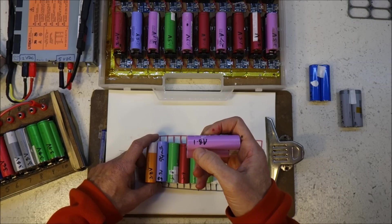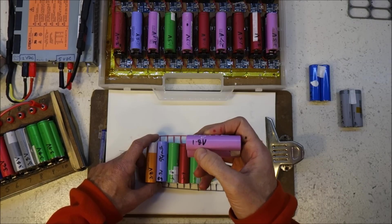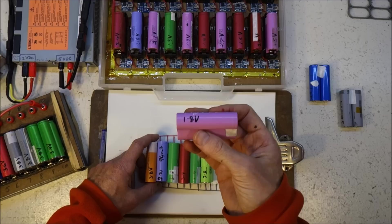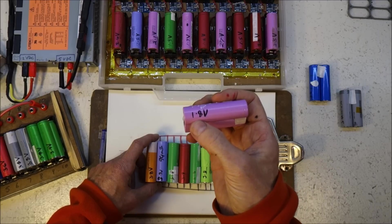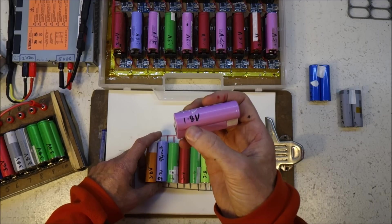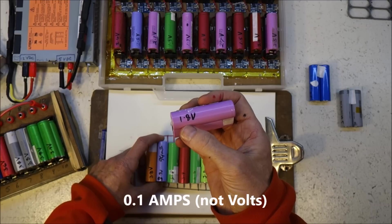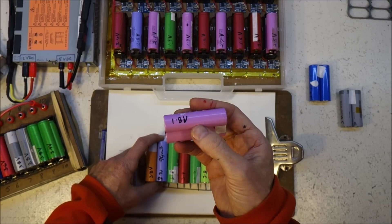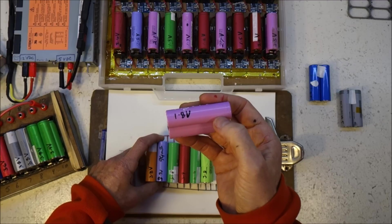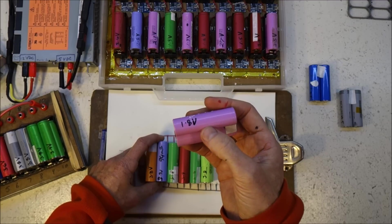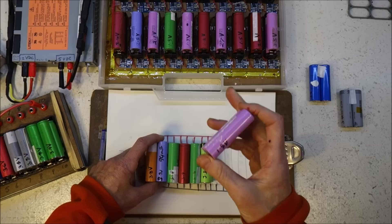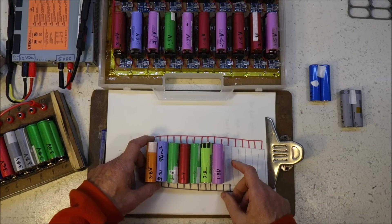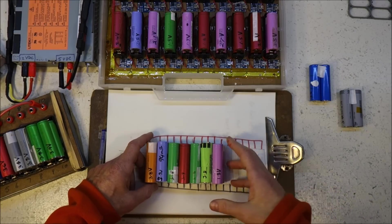1.8 volts is way past what's considered dead by most people. The way to bring those back to life is to trickle charge them very gently, like 0.1 of an amp, or even 0.01 of an amp, for hours and hours to slowly bring them up to some reasonable voltage, like 3 volts. That scenario is not ideal. The solution to that is pretty straightforward.